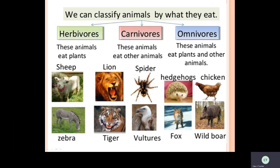Herbivores are animals that eat plants. Carnivores include lion, tiger, spider, vultures — these animals eat only flesh. Omnivores eat both plants and animals. Examples of omnivores include hedgehogs, hen, fox, wild boar, and bear. Sheep, zebra, cow, and buffaloes are examples of herbivores.